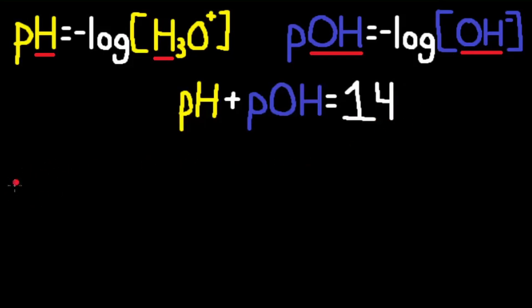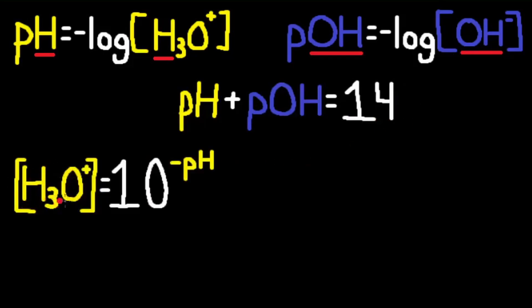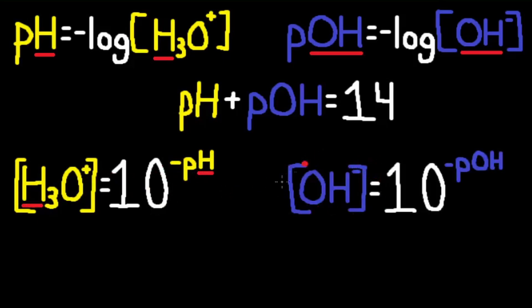We need to know that the concentration of H3O+ is equal to 10 to the power of negative pH. The H's go together. And the concentration of OH- is equal to 10 to the power of negative pOH. The OH's go together.